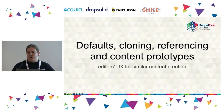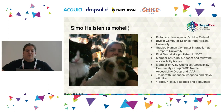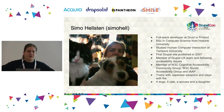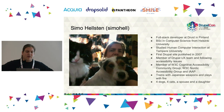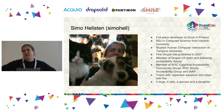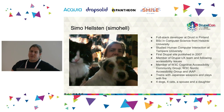I'll say a few words about myself first. My name is Simo Helsten. I'm a full stack developer at Druid in Finland. I studied computer science in Helsinki and Tampere Universities, and my first Drupal site went live in 2007 — that was Drupal 5 at the time.